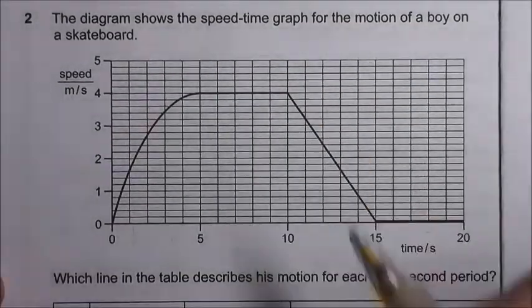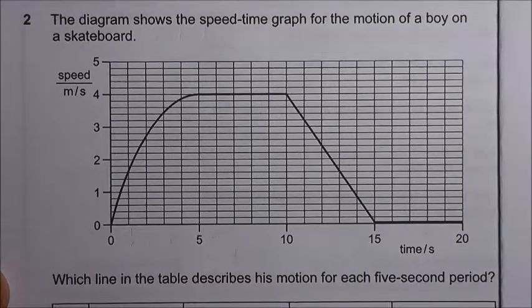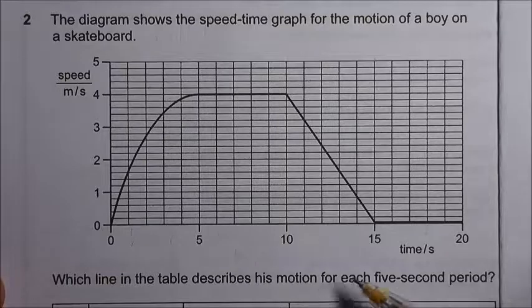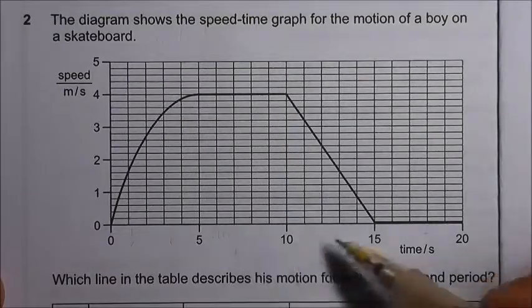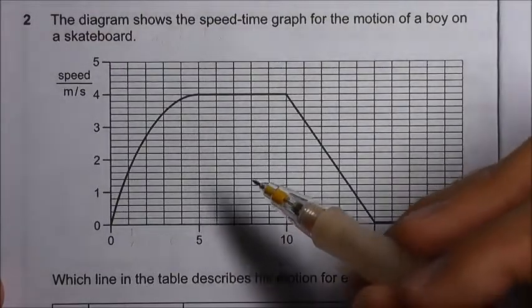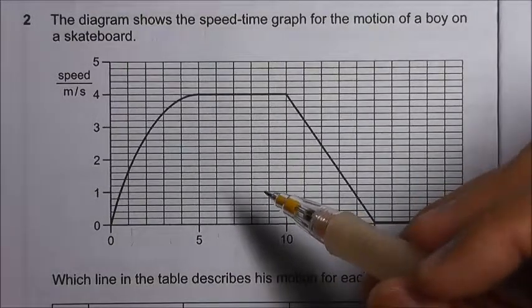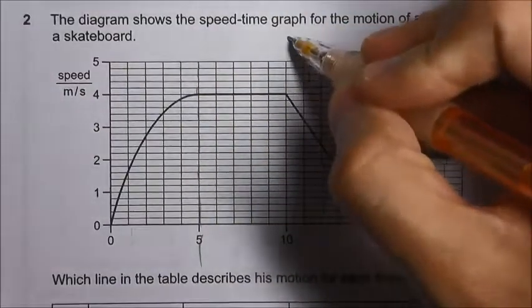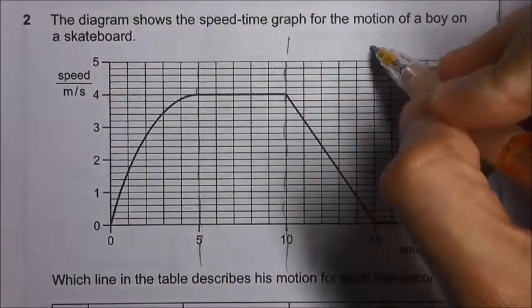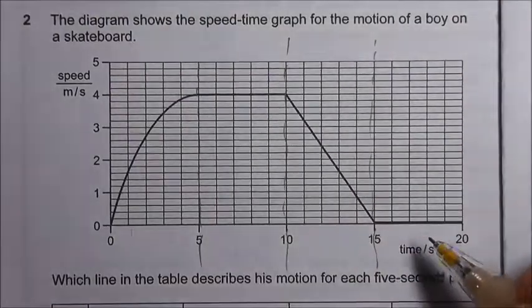We are given a speed time graph for the motion of a boy on a skateboard. We are supposed to describe his motion for each 5 seconds period throughout the 20 seconds journey. This speed time graph can be divided into 4 sections: from 0 to 5 seconds, 5 to 10, 10 to 15, and 15 to 20.